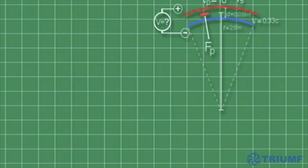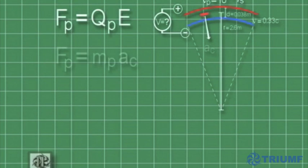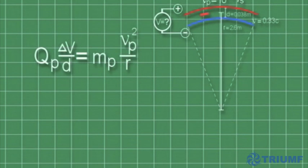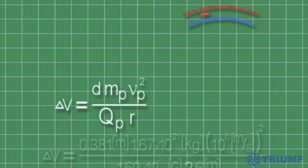We start by equating the electrostatic force with the centripetal force. Plugging in the expressions for the electric field and the centripetal acceleration, we rearrange the formula to isolate the potential difference.